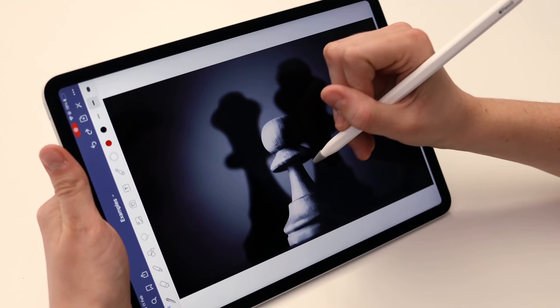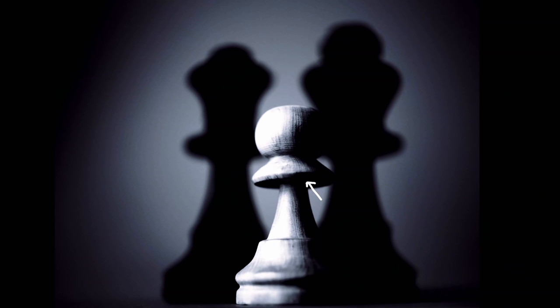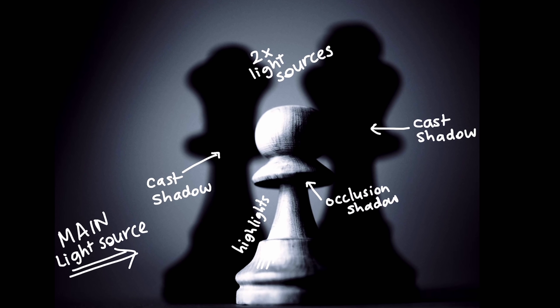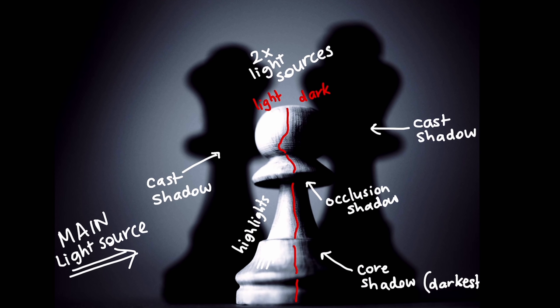Let's look at some examples. This chest piece has a lot of contrast and it's very easy to spot the shadows. We have an occlusion shadow underneath, and we have two different cast shadows here, which means there are actually two light sources. But our main light source is coming from the left, which is casting the most shadows on the form — the object itself. We have a lot of highlights on the left and our core shadow on the right, which means we can split a line right down the middle to separate the light side on the left and the dark side on the right.